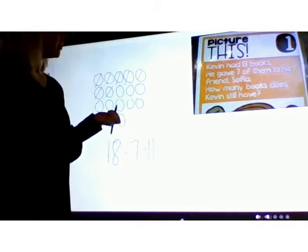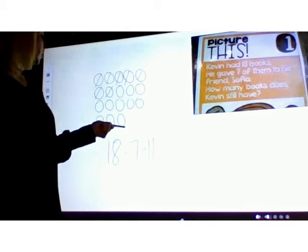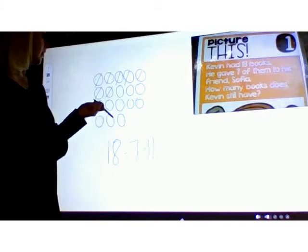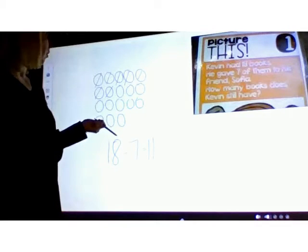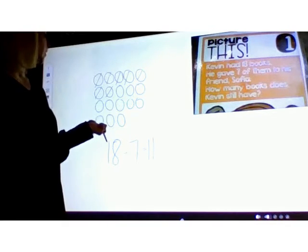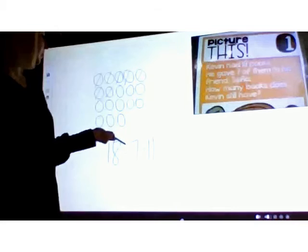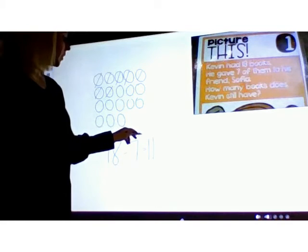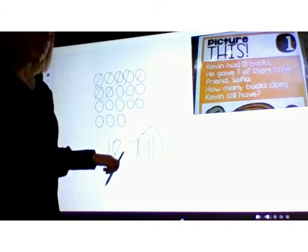Now we have to circle our answer, and we figure out which number to circle by figuring out what number we had to solve for. We knew he had 18 books, we knew he gave seven of them away. The number we didn't know was 11, so that's the answer we're going to circle.